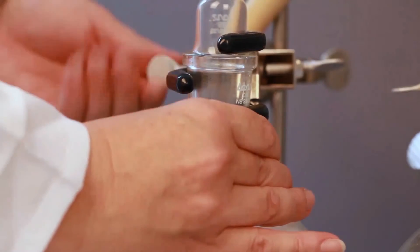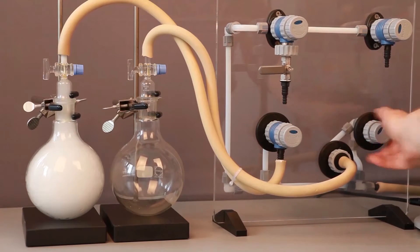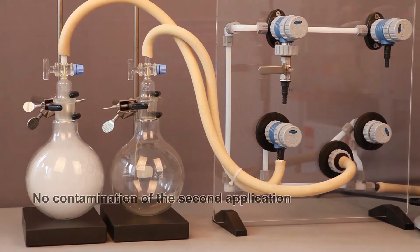As before, a smoke-filled flask is connected to one of the ports on the vacuum network. The VacuLand valve is then opened and as a result, the check valve prevents the contamination of the second flask.